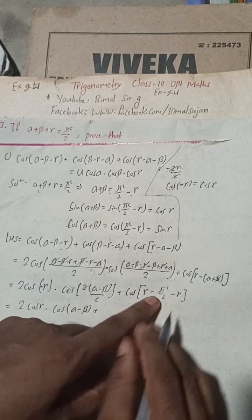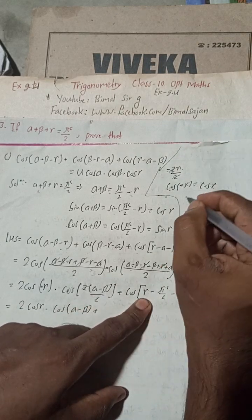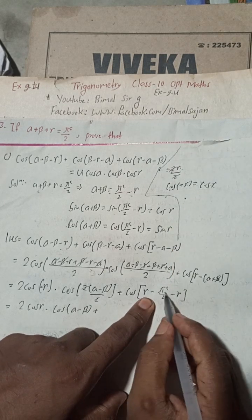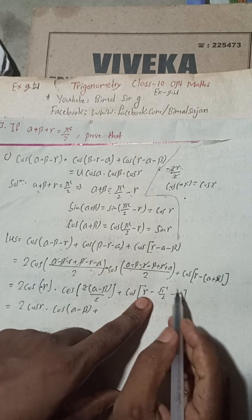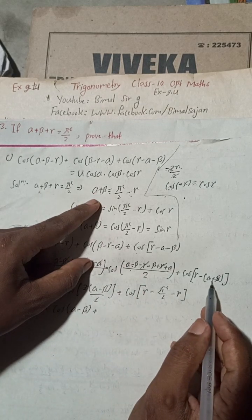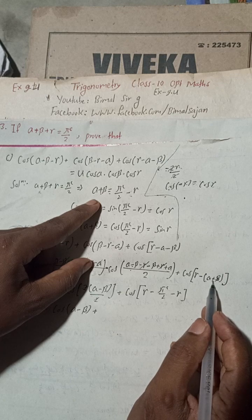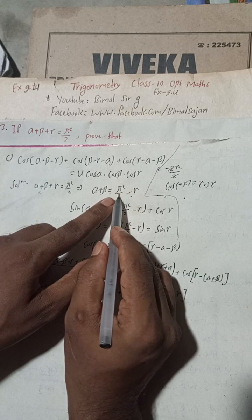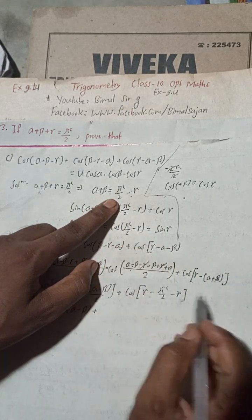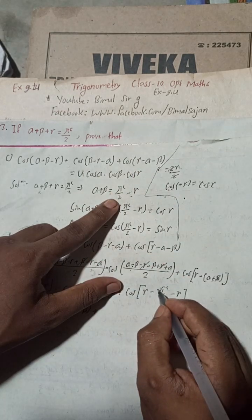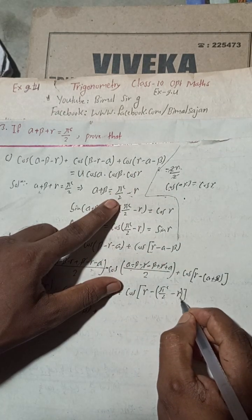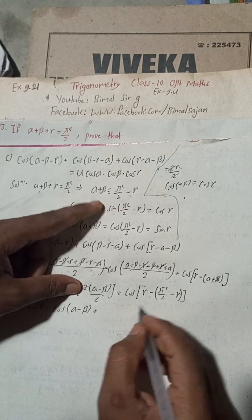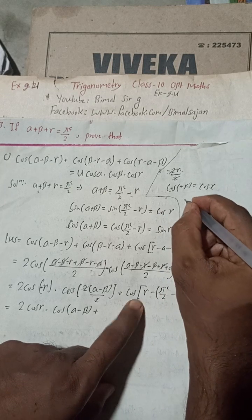Resuming: this is plus gamma and this is minus gamma. Alpha plus beta here equals pi/2 minus gamma, so I have to take this part in brackets — the bracket is very important here, otherwise it will cause mistakes.